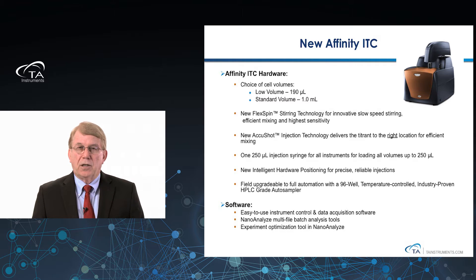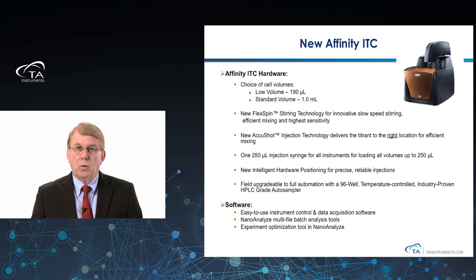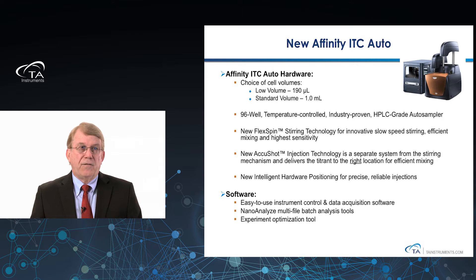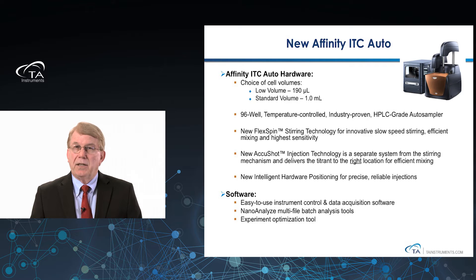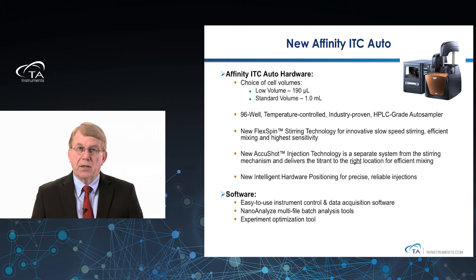The software features new capabilities in data analysis and data acquisition to help with sample throughput. The Affinity ITC Auto incorporates all of the new innovations. As you add the new arm for full automation, you don't sacrifice cell volume — you can still automate either standard volume or low volume instruments. You get the HPLC-grade autosampler, the new flex-spin stirring technology, the new AccuShot injection technology, and the new intelligent hardware positioning, so you don't sacrifice anything by going to automation.